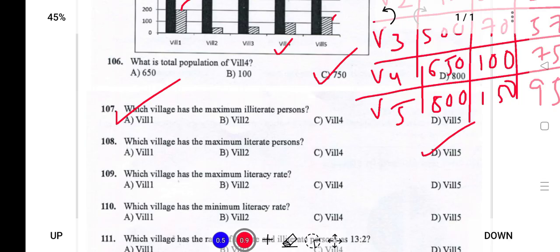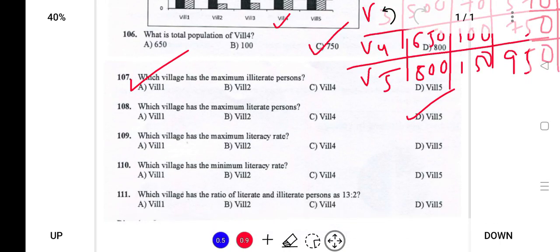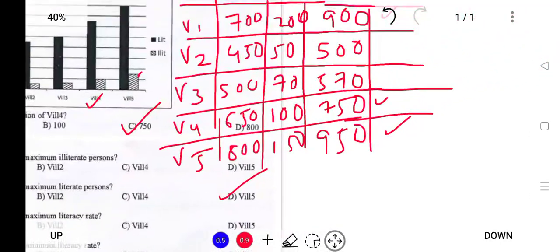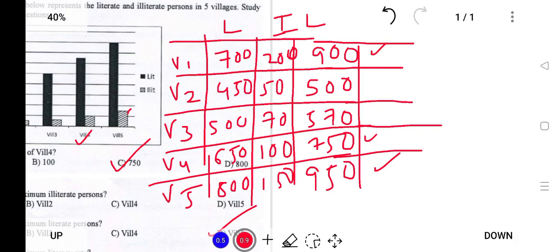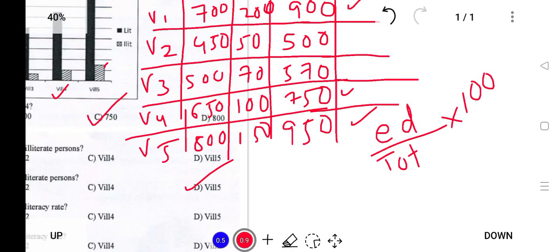Next: Which village has the maximum literacy rate, and which has the minimum literacy rate? First, what is the literacy rate formula? Literacy rate equals number of literates divided by total population, multiplied by 100. So we need to apply this formula to all five villages.